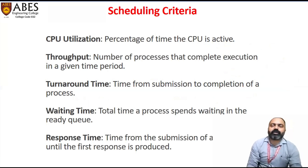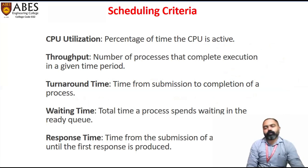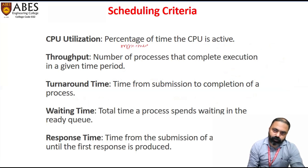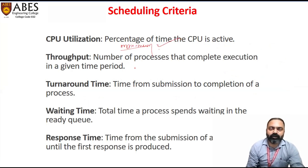Regarding performance criteria: CPU utilization should be maximum — we always want the CPU to not sit idle, even for a single unit of time. Throughput means the number of processes executing per unit time should be maximum. The higher the number of processes executing in unit time, the higher the system throughput.